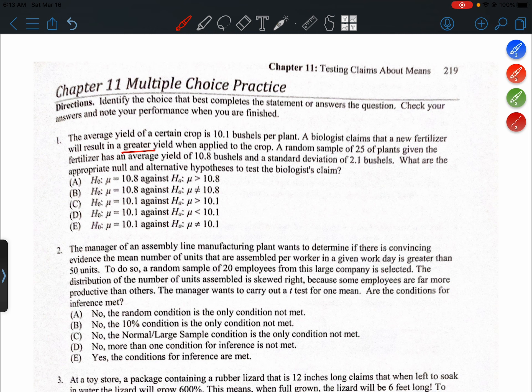Alright, so 10.1 is the initial claim, right? 25 is the sample size, so n equals 25. 10.8 is the statistic, the sample average, so that's x-bar. And then 2.1 is the standard deviation.